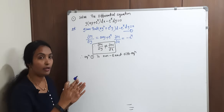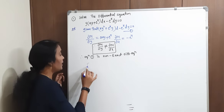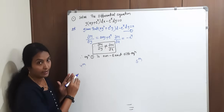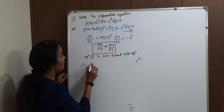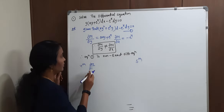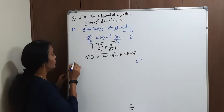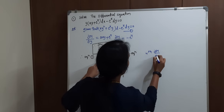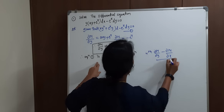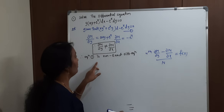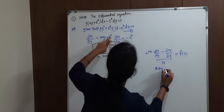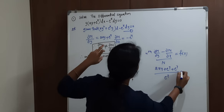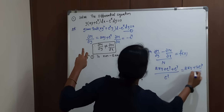Go for the fourth method — this is very very important. We apply the fourth method: dou M by dou y minus dou N by dou y divided by N, which must equal f(x). Substituting: 2xy plus e power x minus plus e power x, upon N and e power x. This simplifies to 2xy plus 2 e power x divided by e power x, which equals 4.